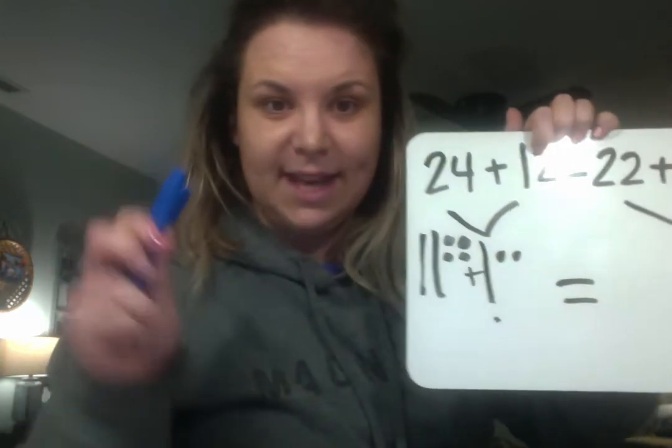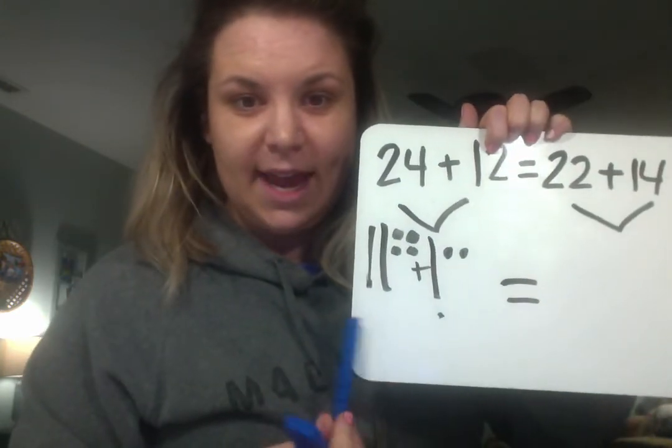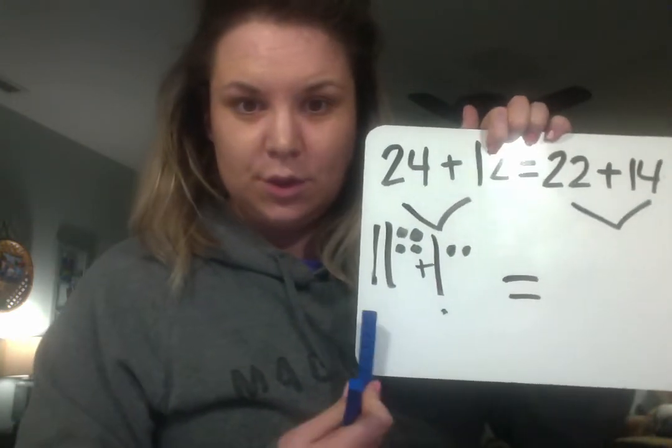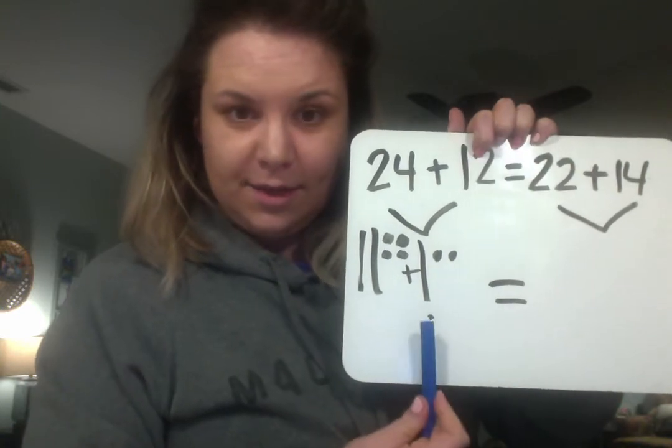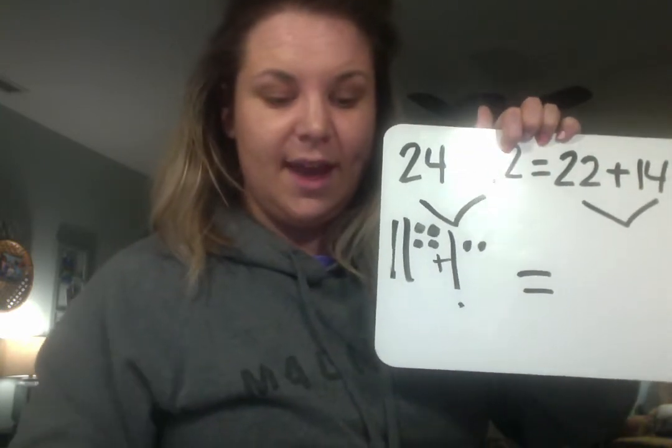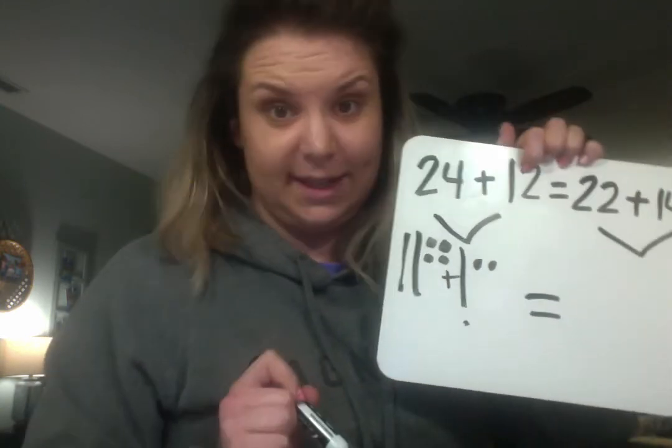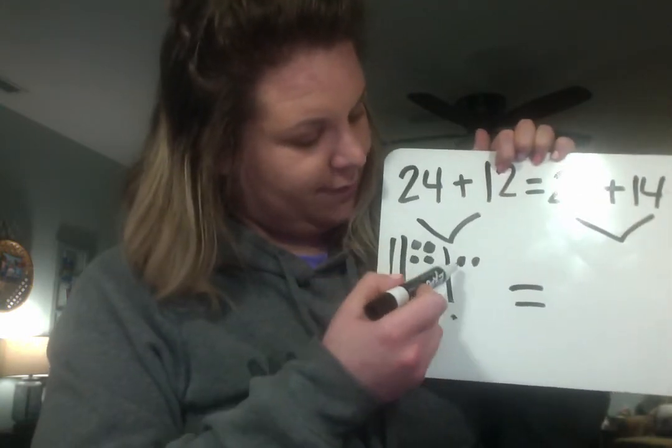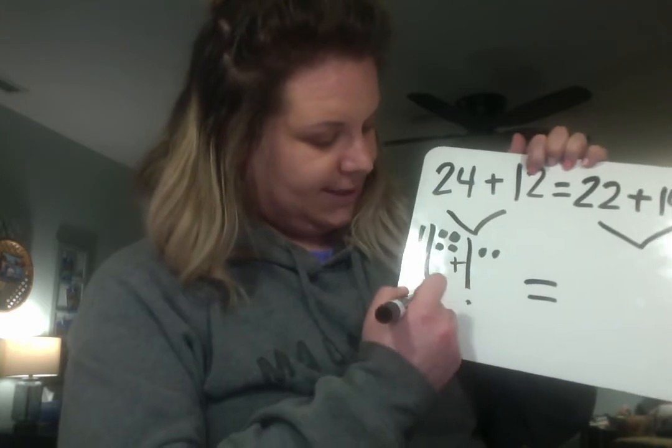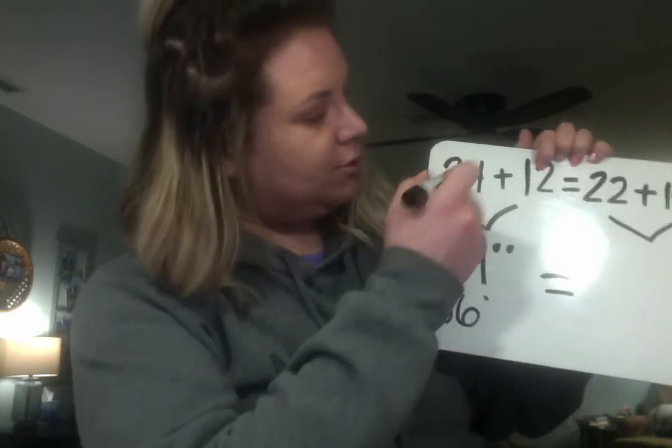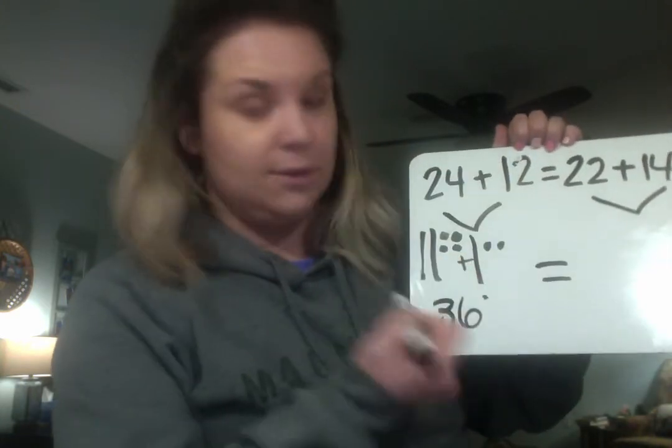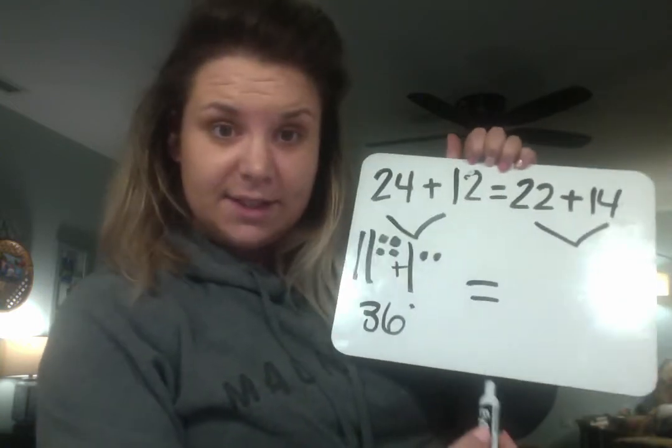So then I'm going to go back and count them all up. If I count them with my base 10 blocks in here. 10, 20, 30, right? And then I need to count up all my ones. I'm not going to pick those ones up because I keep dropping them. One, two, three, four, five, six. So our answer on this side is 36. 24 plus 12 equals 36. Let's solve the other side together now.